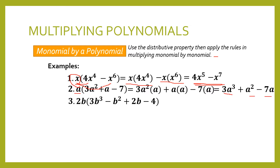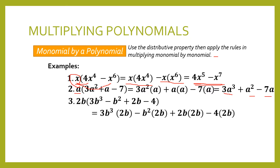For example number 3, we have 2b times the quantity 3b cubed minus b squared plus 2b minus 4. When we distribute the multiplier, which is 2b, and when we multiply, we have 6b raised to 4 minus 2b cubed plus 4b squared minus 8b.